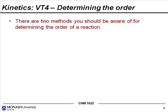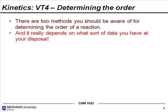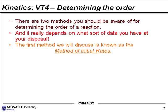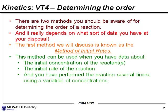There are actually two methods you should be aware of for determining the order of a reaction, and it depends on what sort of data you have at your disposal. The first method is known as the method of initial rates. This method can be used when you have data about the initial concentration of reactants, the initial rates of the reaction, and you've performed the reaction several times using a variation of concentrations.